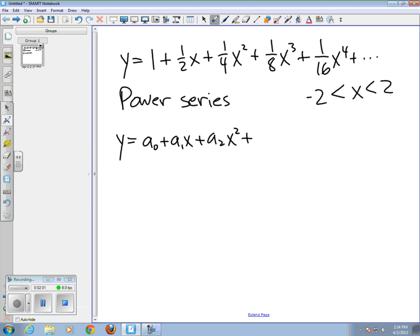And the general power series looks like y equals a0 plus a1x plus a2x squared and so on. And so in these cases, these a's are the coefficients, they're just numbers. And they're subscripted with the subscript for each coefficient matching the power of x that it goes with. So this is the general form of a power series.